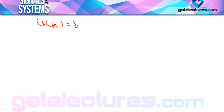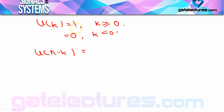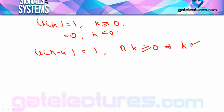U(k) = 1 for k ≥ 0, and 0 for k < 0। Similarly, U(n-k) = 1 for n-k ≥ 0, that is k ≤ n; and U(n-k) = 0 for n-k < 0, that is k > n।